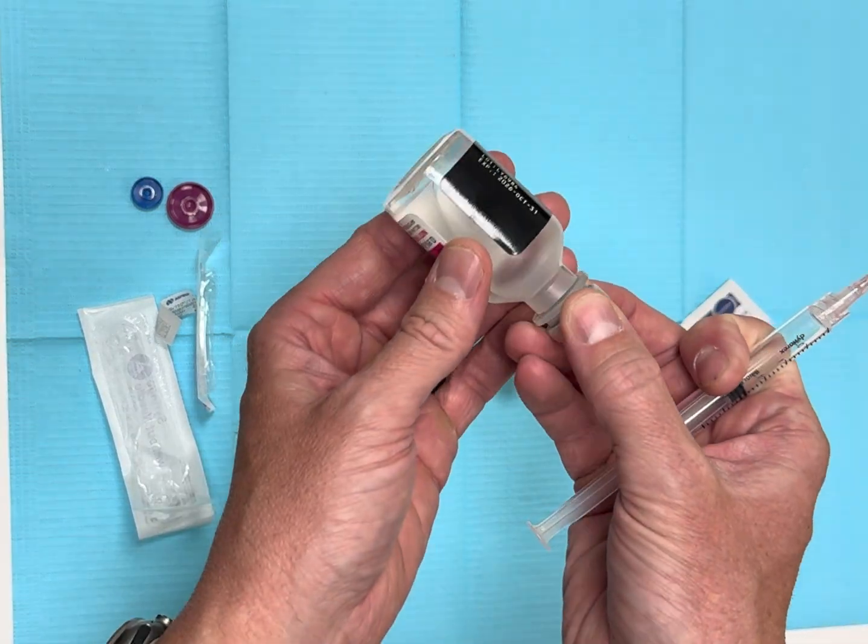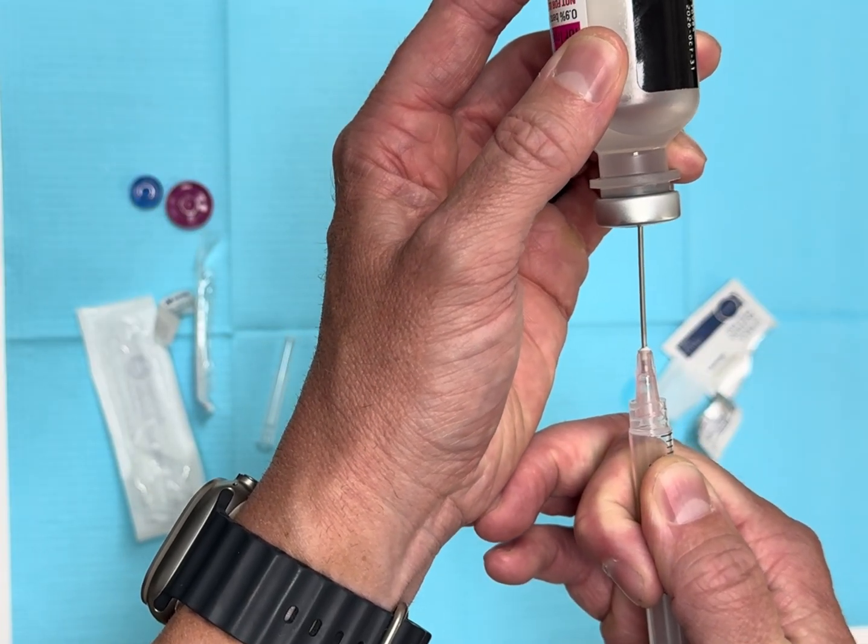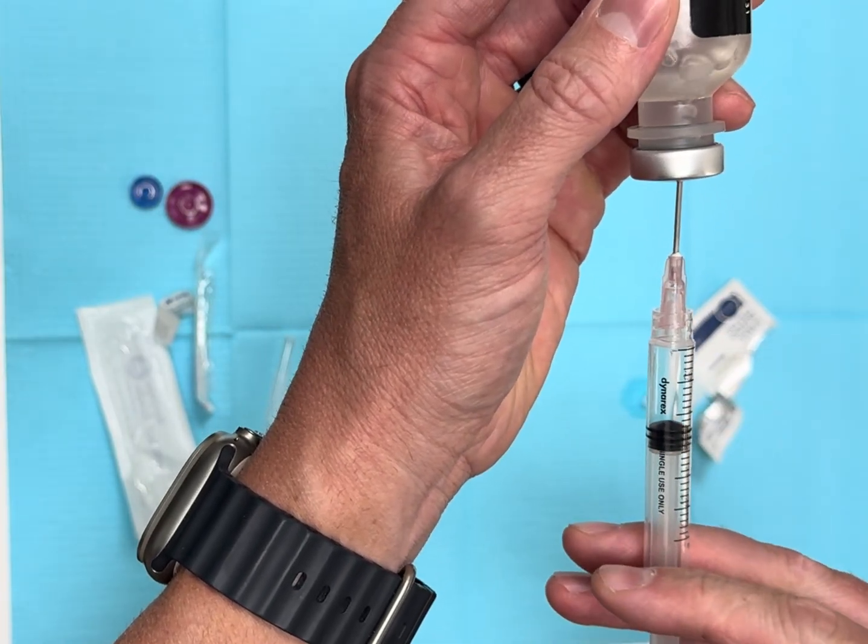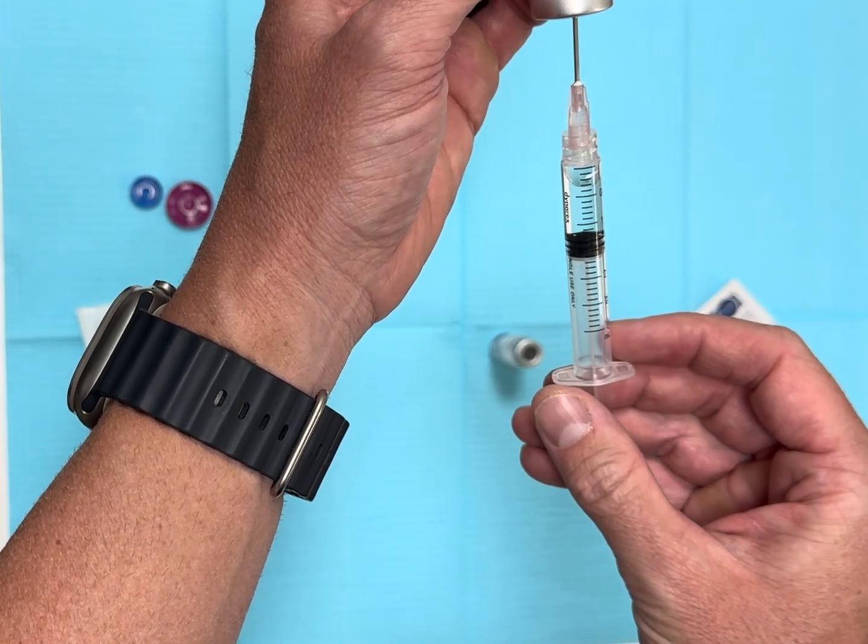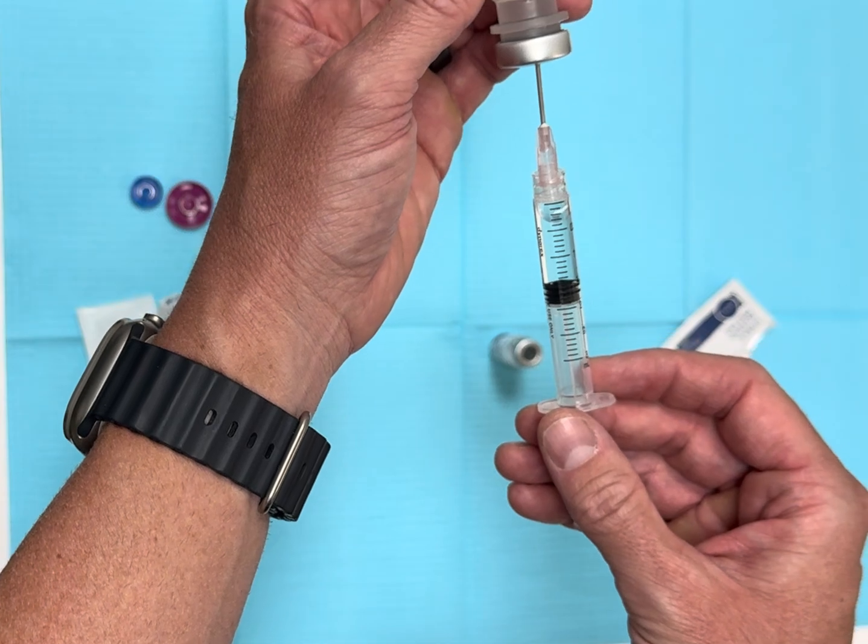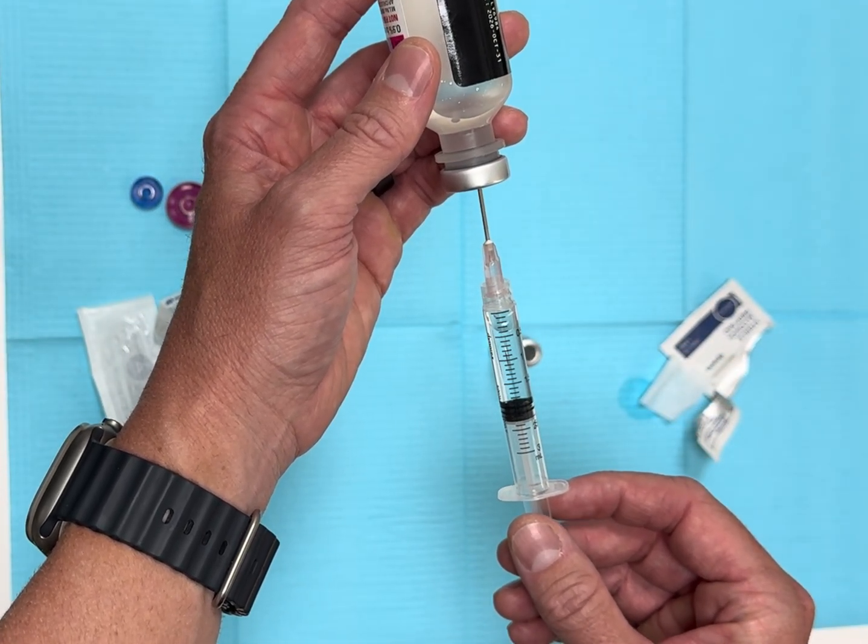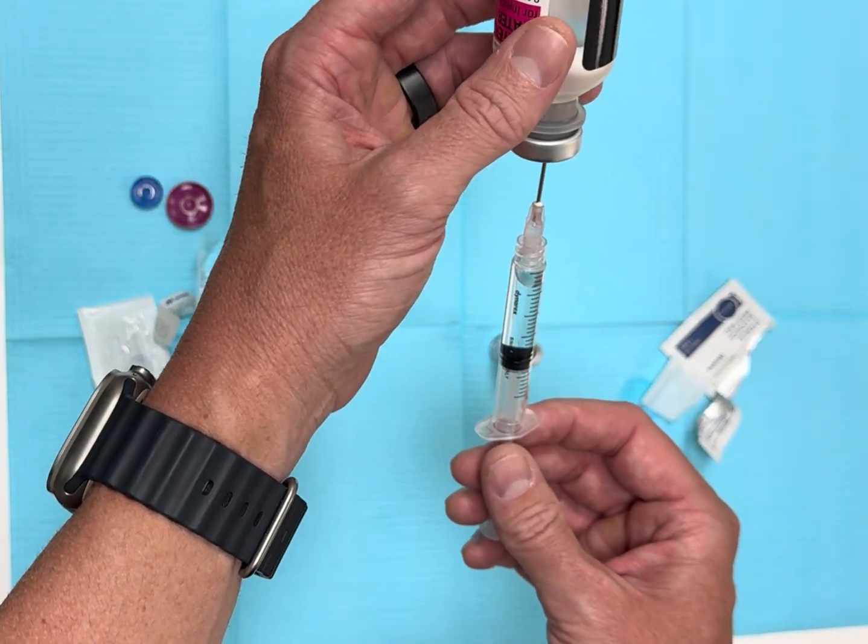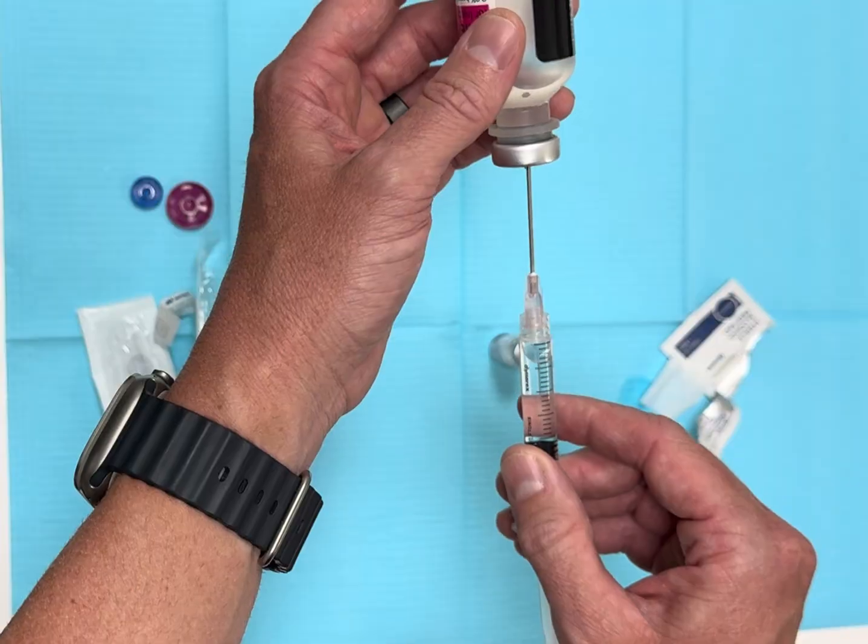Now this creates negative pressure. You're going to push into the center of the gray rubber, push the air in, and then you'll see it helps you draw back out and finish up until you have the right amount of water. Sometimes there's a little air bubble left in there, so what I like to do is pull that out and push the top until I know I'm at exactly the right amount.